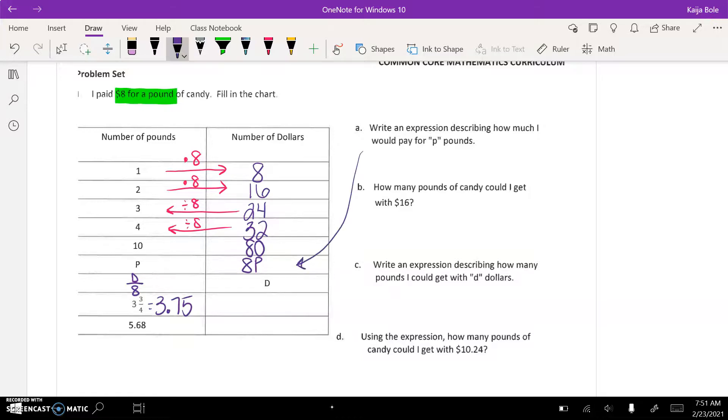Then how many pounds of candy could I get with sixteen dollars? So then you have to decide, well sixteen dollars, what letter is that? That is d for dollars. So I have to use the expression d over eight, replace the d with sixteen, and I would get two, and it would be two pounds.